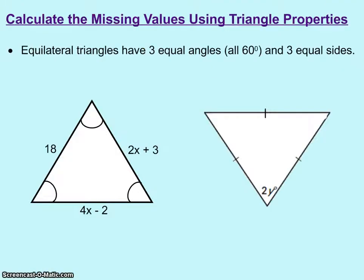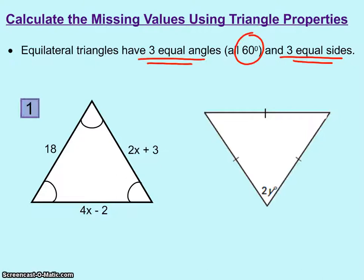Now we're going to talk about equilateral triangles having three equal angles and three equal sides. Those angles will always be 60 degrees. In this first example, we're given that there are three angles — 1, 2, 3 — that have all been marked congruent. That means that all three sides in this problem will also be congruent.